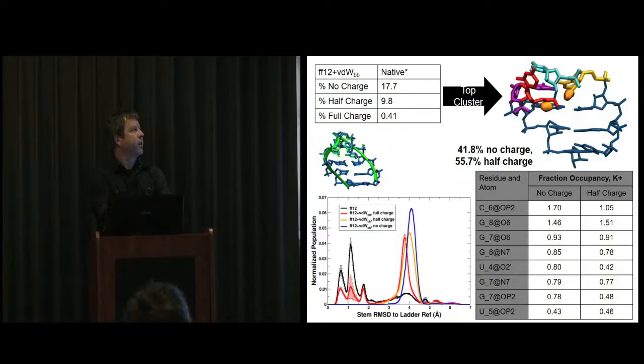More recently, we started to play newer games, where we've seen some artifacts due to what we call the ladder structure, where a particular part of the molecule wants to move in a particular way that's not representative of experiment. We thought that had to do with a misbalance in interactions. We altered the charge artificially on the O2 prime hydroxyl. It turns out it nicely improves the population of the experimental geometry. But we also find this new structure, the top cluster shown up there, where an ion has come in and mediates a phosphate interaction, because we've changed the balance. This becomes the dominant populated conformation.